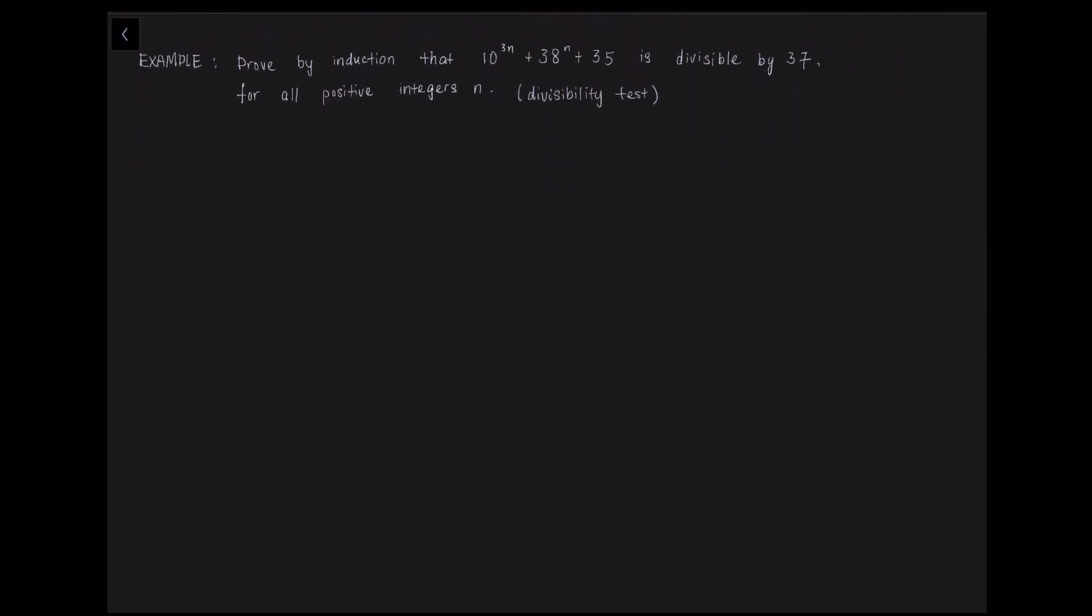Now, let us see how to prove a proposition concerning the divisibility of an expression using proof by induction. So in this example, it wants us to prove by induction that 10 to the power of 3N plus 38 to the power of N plus 35 is divisible by 37 for all positive integers N.